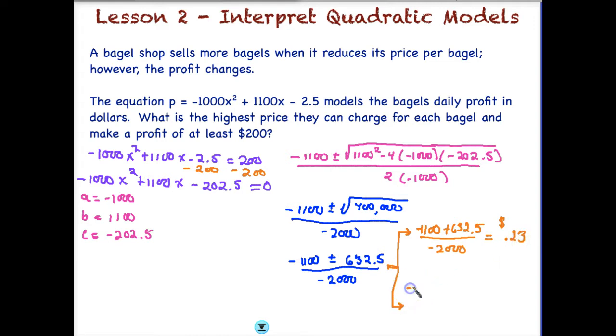Our second equation, we have the negative 1,100 minus this time, 632 dollars and 50 cents, or 632.5, I should say. That's not necessarily the answer. The answer, so when I divide that out, I get 87 cents approximately, and I round it a little bit. So the question says, what is the highest price they can charge for each bagel and make a profit of at least $200? Well, the highest price that we found was 87 cents. And that's using our quadratic formula to interpret this model.